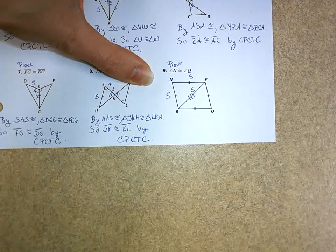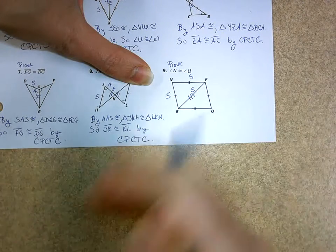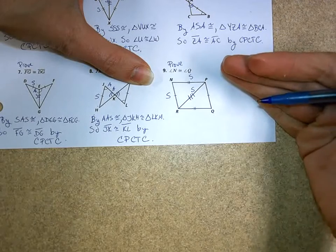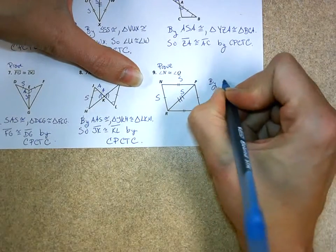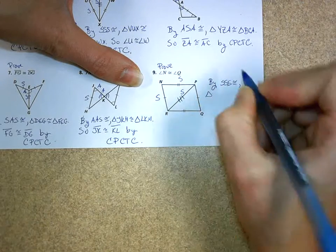Now, one thing I told you guys is you have to know what CPCT stands for, but what's just as important, why are these two triangles congruent? So we'll just say it right over here. By the side, side, side congruence, triangle.